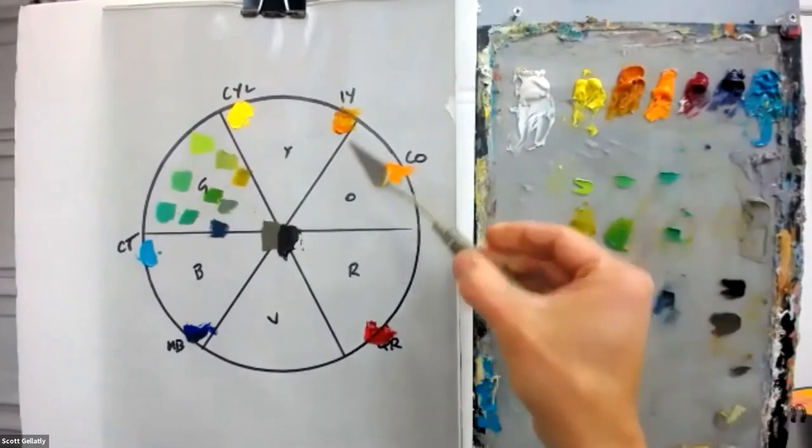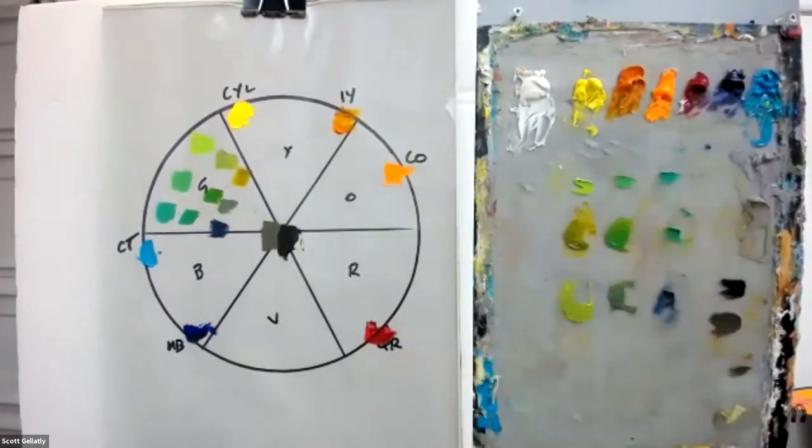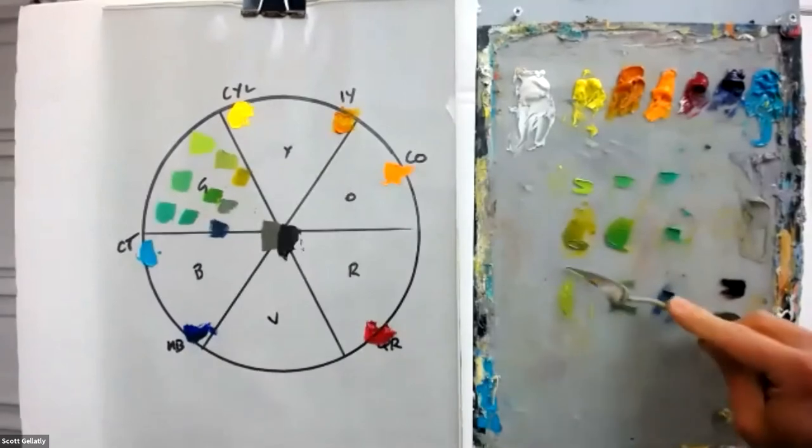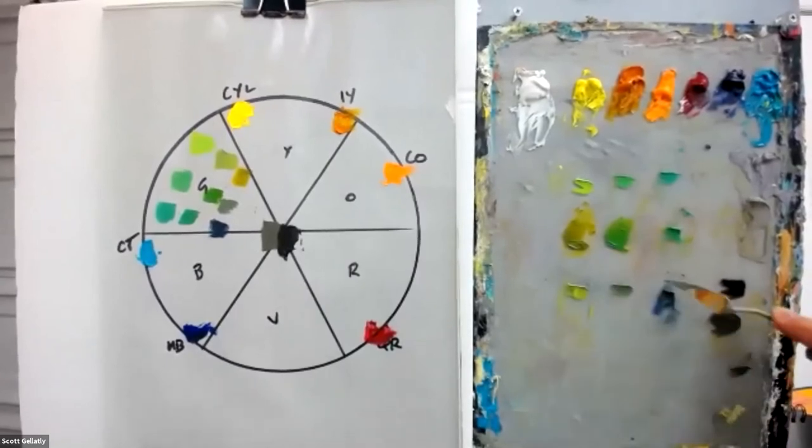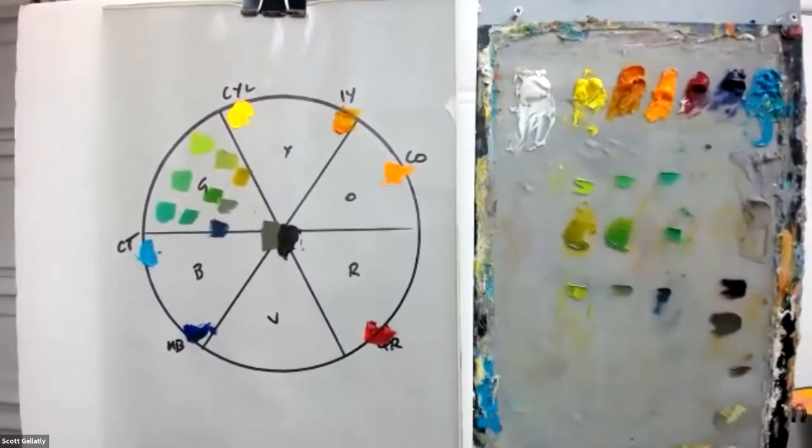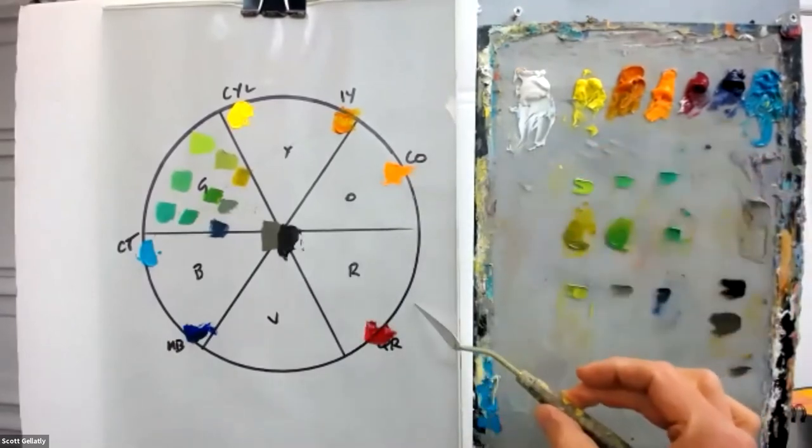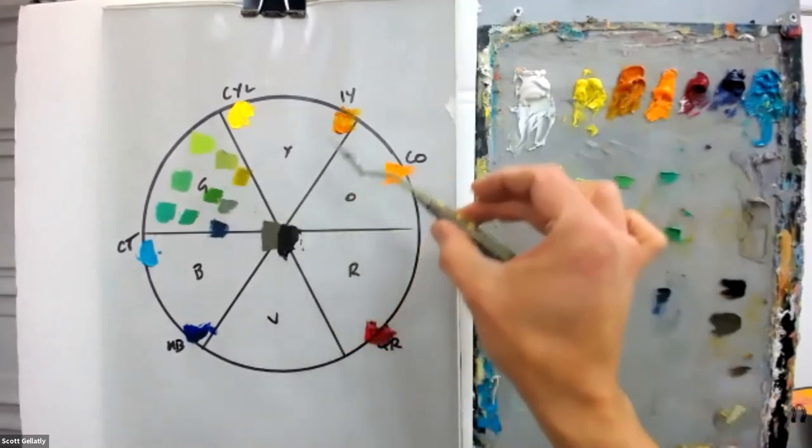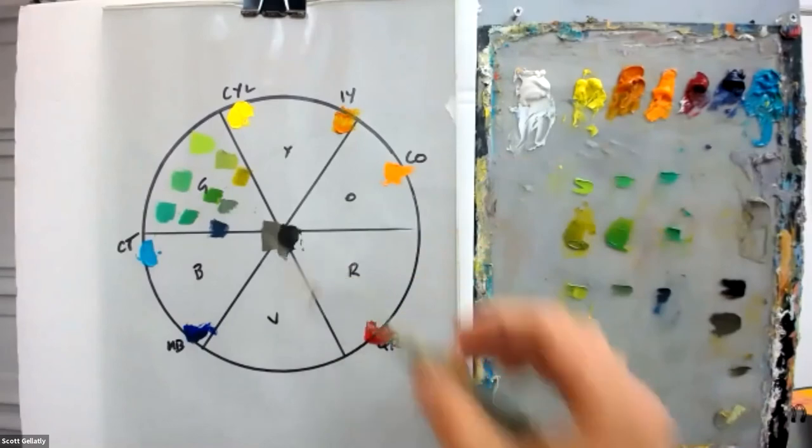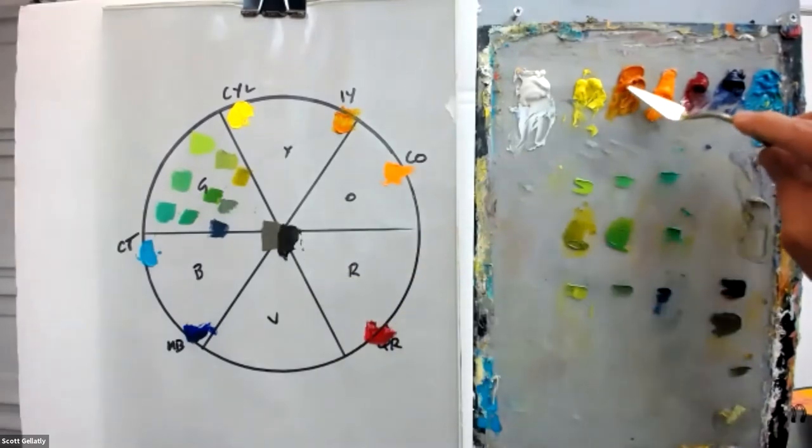And then the colors, the yellow and the blue that exist farthest away from each other are the Indian yellow and ultramarine blue. Indian yellow has a very orange bias to it. Ultramarine blue has a very violet bias. That orange and that violet are closest to red. Red being the complement of green is going to pull those mixtures closer to that neutral center of the color wheel.